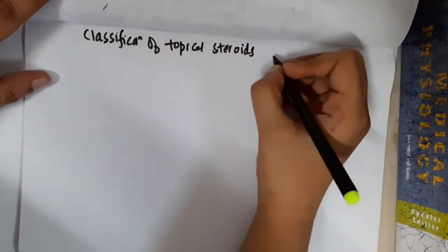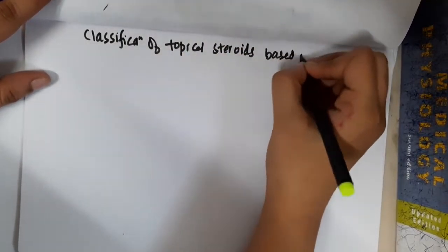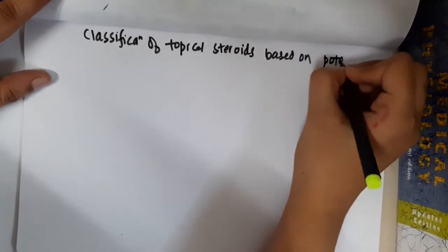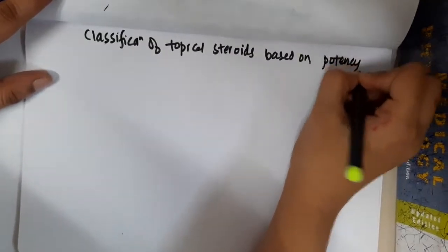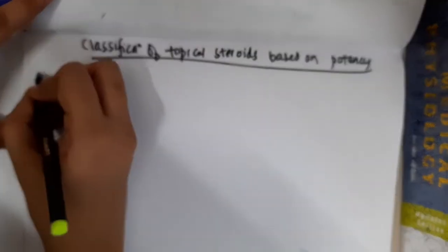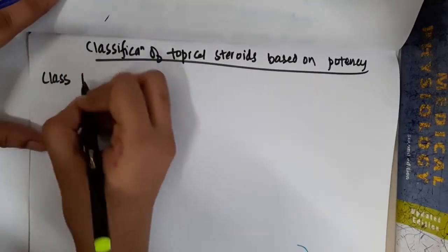Classification of topical steroids based on potency. If you see the classification of topical steroids based on potency, we have 7 classes.